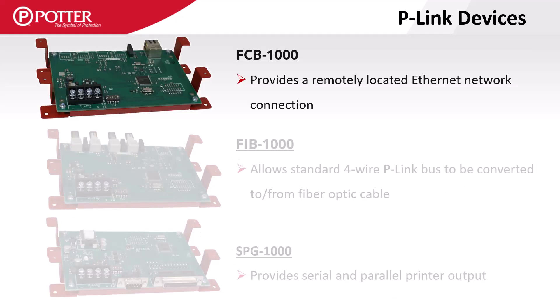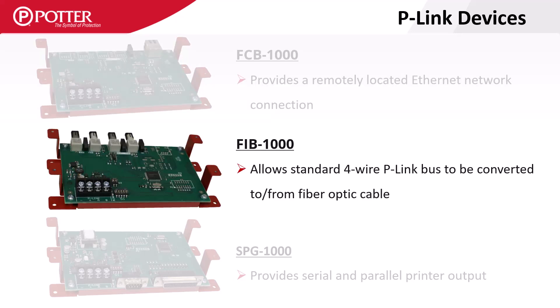The FCB-1000 provides a remote Ethernet connection for IP reporting only, allowing the Ethernet port to be located as close to the source of Internet access as possible. The FIB-1000 converts the P-Link communication to and from multi-mode fiber optic cable and is installed in pairs — one will act as a transmitter and the other a receiver.